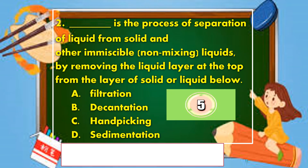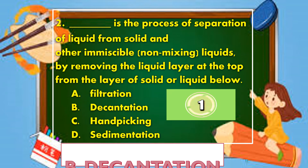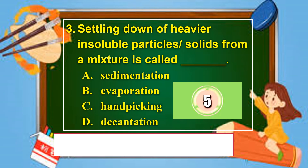Question 2: This is the process of separation of liquid from solid and other immiscible, non-mixing liquids by removing the liquid layer at the top from the layer of solid or liquid below. Is it A. Filtration, B. Decantation, C. Handpicking, or D. Sedimentation? The correct answer is letter B. Decantation.